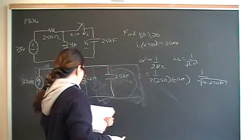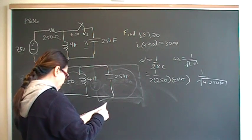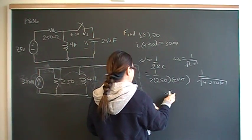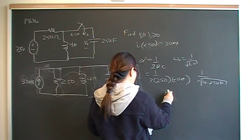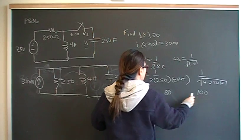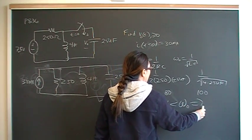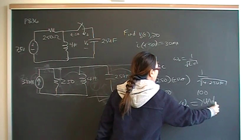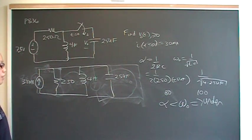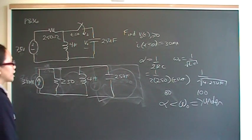When you put that into your calculator, you should come out with values of alpha will be 80 radians per second, and omega naught will be 100. We have a situation where alpha is less than omega naught. This tells us that we have an underdamped response.